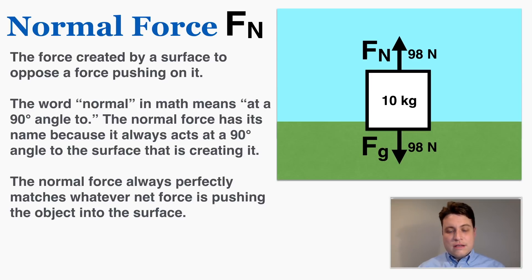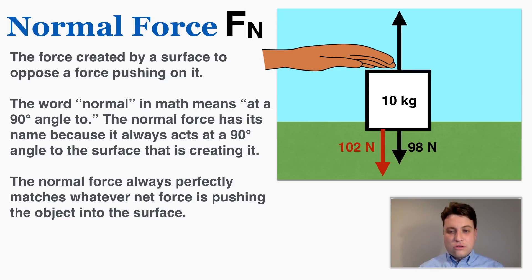If I were to push down on this box and give it an additional force into the ground, the ground would actually push back up with exactly as much force to balance out the total force going down. So if I add in an additional 102 Newtons with my hand plus the 98 Newtons of the box's weight, the ground automatically knows to push back up with 200 Newtons of normal force to perfectly balance out the forces and make the total equal to zero.